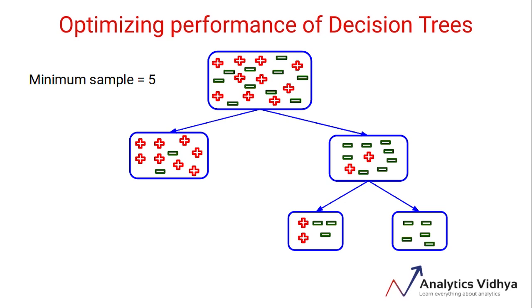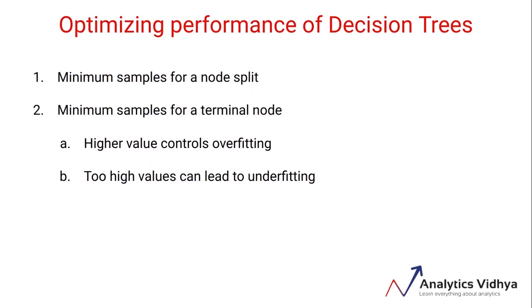We've seen that we have controlled the growth of the tree by setting a minimum sample criterion for terminal nodes. If we set a high value for this, it will definitely help to control overfitting. But again, a word of caution: setting a very high value could lead to underfitting problems.